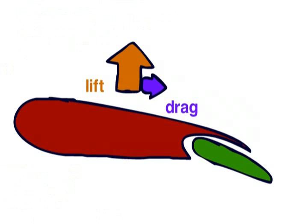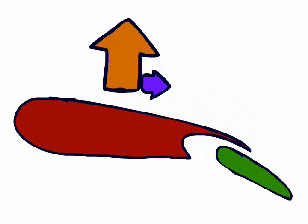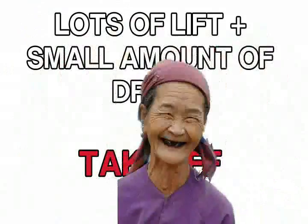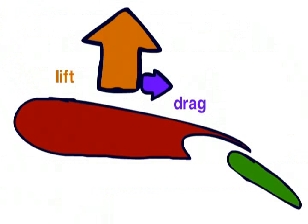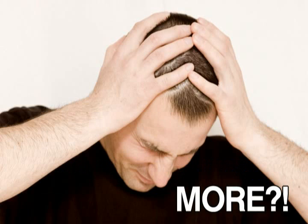At first, lowering the flaps results in a large rise in lift with a smaller rise in drag. Lots of lift and little drag is exactly what we want at takeoff, which is why on some aircraft a low flap setting is used for this. However, as the flaps are further lowered, drag will increase a lot more than lift, and this is why a high flap setting is used when landing.